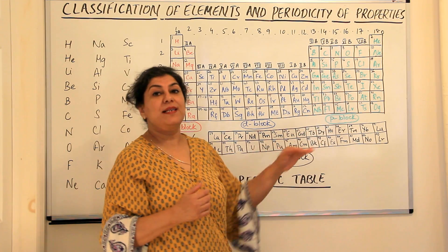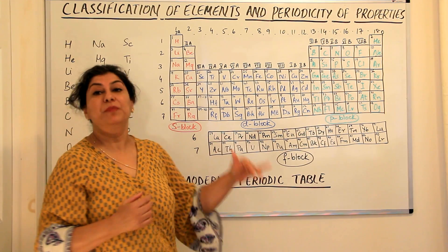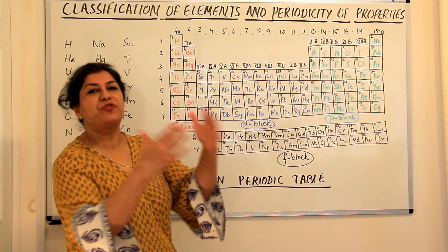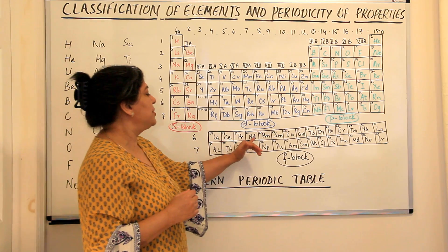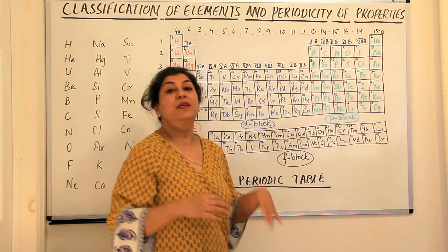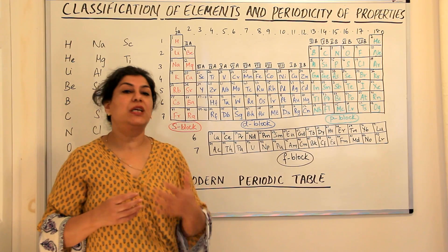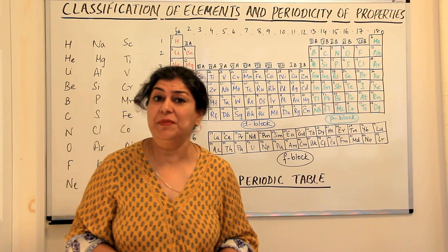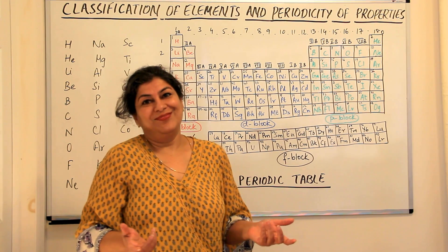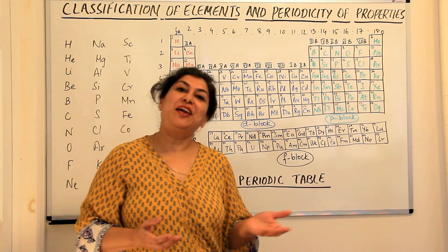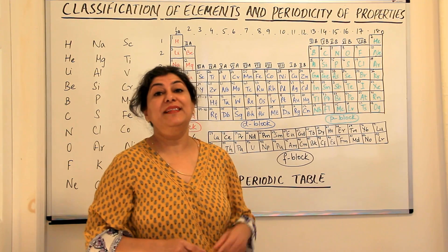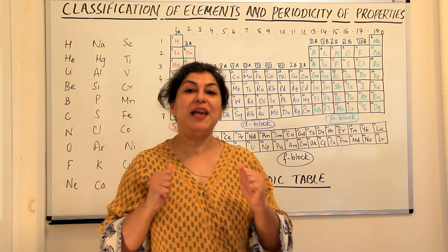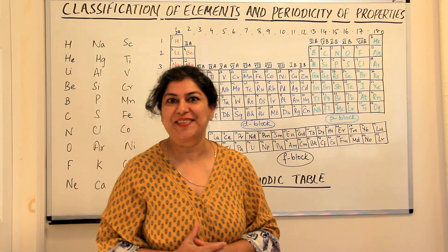For the F block elements — the first series — I just memorized the symbols. I just kept repeating them. I used to keep repeating them, and by the end of about an hour I could memorize the lanthanide series from 57 to 71. Find a way that works for you and memorize these elements — believe me, you'll be very happy you did, especially during your exams.